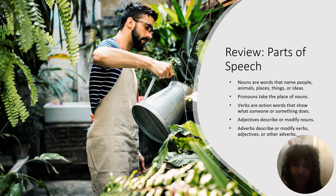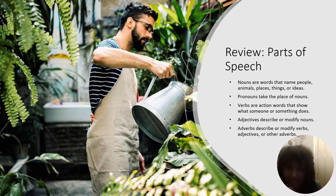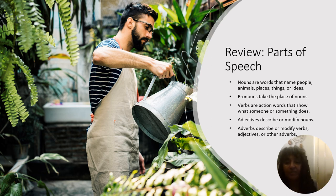Let's do a quick review of the parts of speech. We've learned about nouns, pronouns, verbs, adjectives, and adverbs. Nouns are words that name people, animals, places, things, or ideas. Pronouns take the place of nouns. Verbs are action words that show what someone or something is doing. Adjectives describe or modify nouns. Adverbs describe or modify verbs, adjectives, or other adverbs. All of these words and their jobs make for a beautiful and rich storytelling situation. The more parts of speech you put into your story, the more entertaining, informative, and interesting to read your story will be.